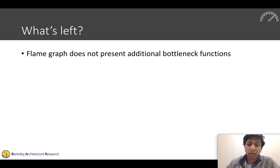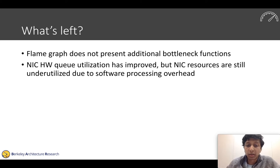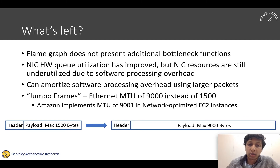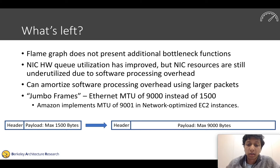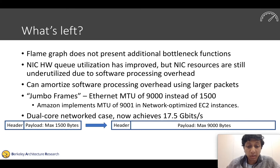The flame graph now shows no additional bottleneck functions, and hardware queue utilization has improved. But there's still some underutilization due to software processing overhead. We want to amortize this overhead using larger packets — an optimization called Jumbo Frames, a well-known Ethernet optimization where we increase the payload in each Ethernet frame to amortize the cost of generating headers. This is an optimization cloud providers use in their network-optimized instances. Once we do this, in the dual-core networked case, we hit 17.5 gigabits per second.